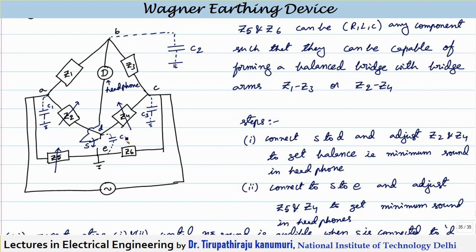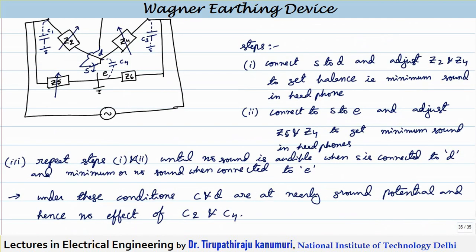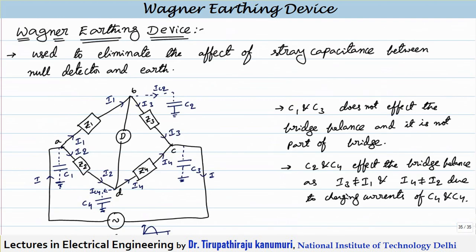By making this adjustment, we ensure that both B and D are at ground potential, and the effect of these capacitances is avoided because no current can pass through them. The current passing through the capacitance is the potential difference between B and ground divided by the impedance of the capacitance — and since that potential difference is zero, no current flows. The major disadvantage of this Wagner earthing device is that in order to get the balance, you have to repeat this procedure many times, which can take a lot of time. But the advantage is we can get perfect balance because the effect of stray capacitances is completely eliminated. I hope the Wagner earthing device is completely clear to you.